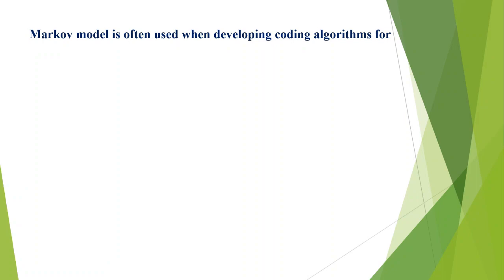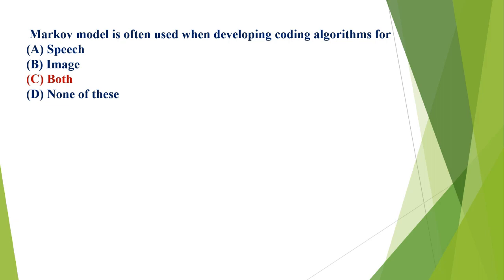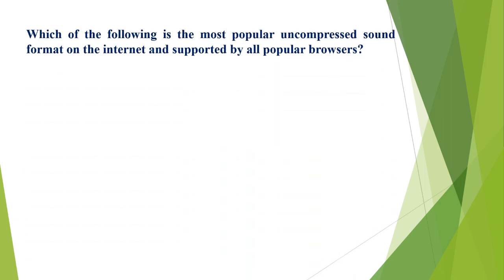Markov model is often used when developing coding algorithms for: A) speech, B) image, C) both, D) none of these. The correct option is C, both speech and image. Which of the following is the most popular uncompressed sound format on the internet, supported by all popular browsers? A) .wav, B) .mp3, C) .rm, D) .midi. The correct option is A, .wav.